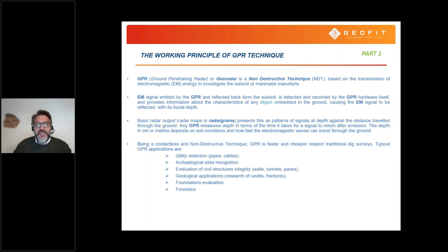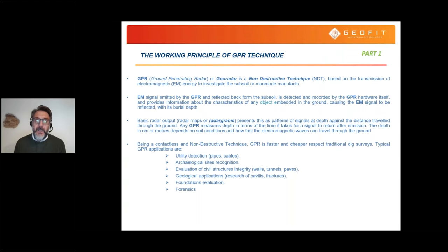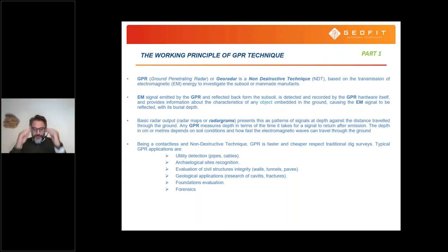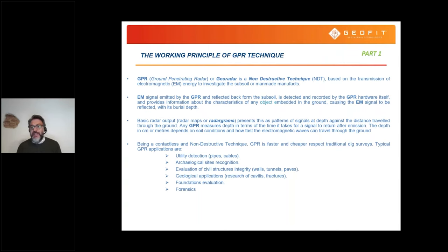GeoRadar is a non-destructive technology based on the emission of electromagnetic waves from what is called an antenna. The emission of these EM waves is directed downwards towards the soil. The aim is to detect all those solutions of continuity that determine the geometry of the subsoil. Applications for GeoRadar technology are quite varied: we have applications for archaeology, utility detection, forensic, geological, and geotechnical purposes — depending on system architecture and antenna type.